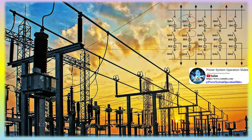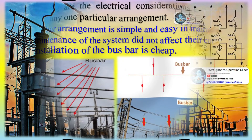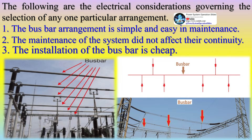Various types of busbar arrangements are used in the power system. The selection of the busbar is dependent on different factors like reliability, flexibility, cost, etc. The following are the electrical considerations governing the selection of any one particular arrangement: the busbar arrangement should be simple and easy in maintenance, the maintenance of the system should not affect continuity, and the installation of the busbar should be cheap.